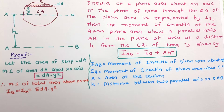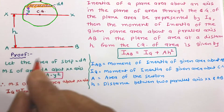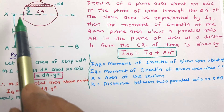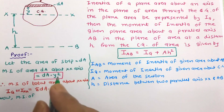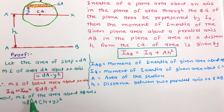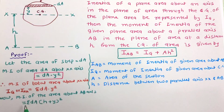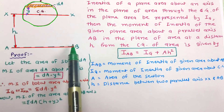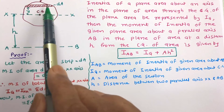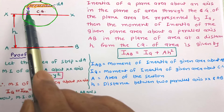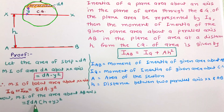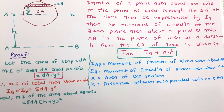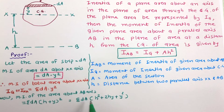Now let us work out the moment of inertia of this lamina about the AB axis. The moment of inertia of the area about AB equals the summation of the moment of inertia of each strip about AB. The moment of inertia of the strip about AB axis equals DA × (H + Y)², which gives the summation of DA × (H + Y)². Expanding this term: Σ(DA × H² + 2HY + Y²).